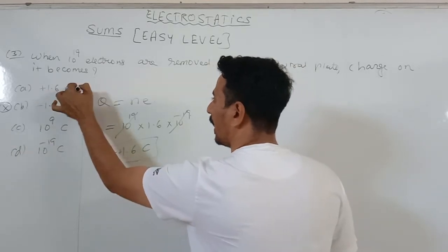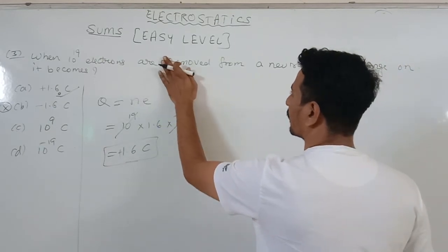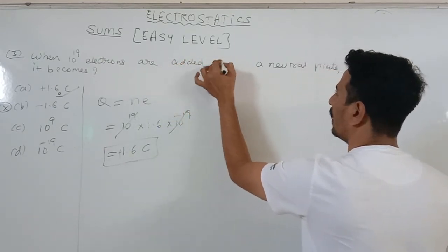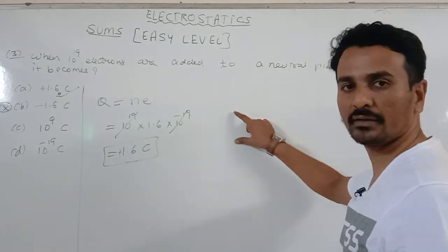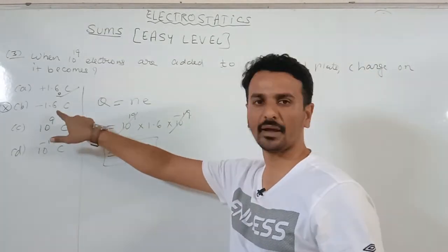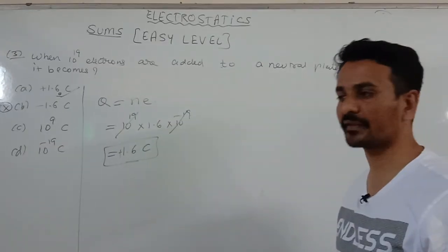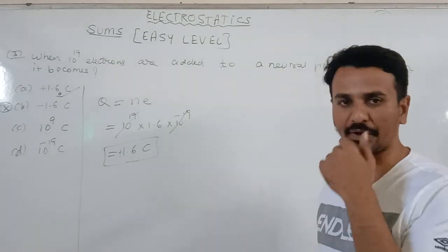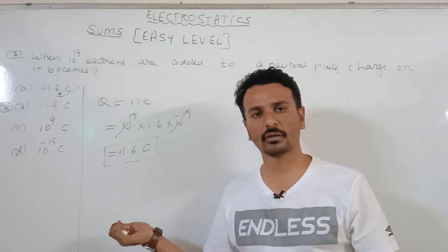If the same question is asked as: when 10¹⁹ electrons are added to a neutral plate, then since electrons are added, it will acquire negative charge. Using the same formula q = ne, the answer will be minus 1.6 coulomb. In the next video we'll discuss Coulomb's law — how to calculate the force between two point charges — and then solve sums on Coulomb's law.